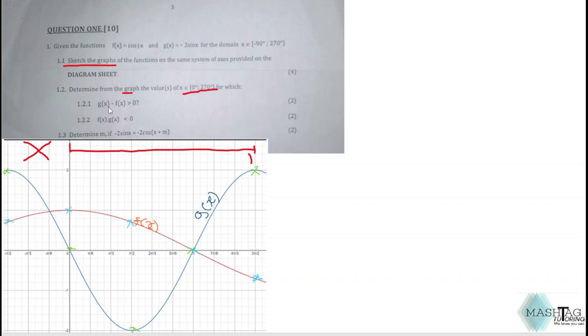Question 1.2.1 says g(x) - f(x) > 0. That just means the difference of the two graphs where the difference is actually positive. You can rearrange this in order to make life simpler: take f(x) to the other side, so you're left with g(x) > f(x).